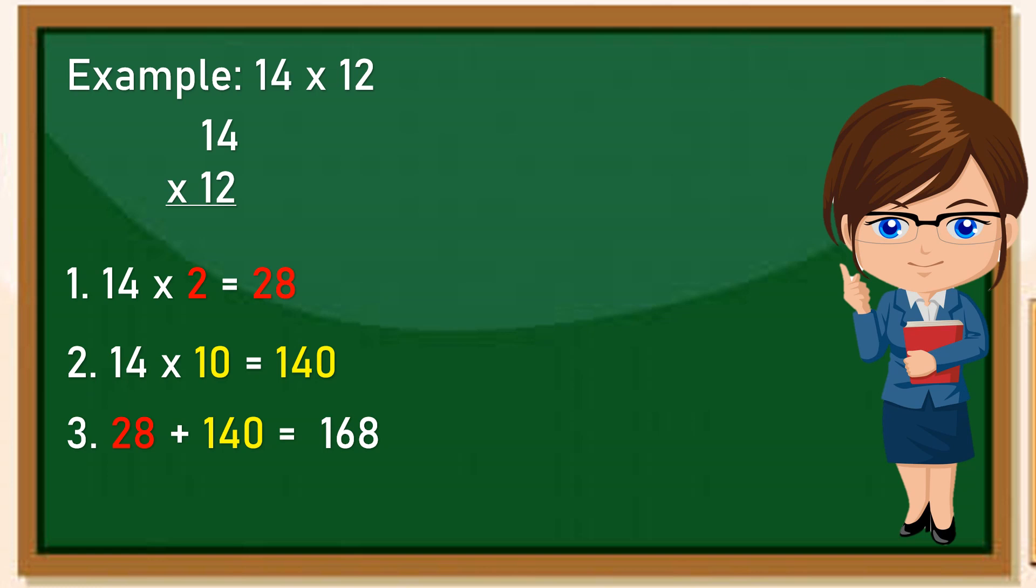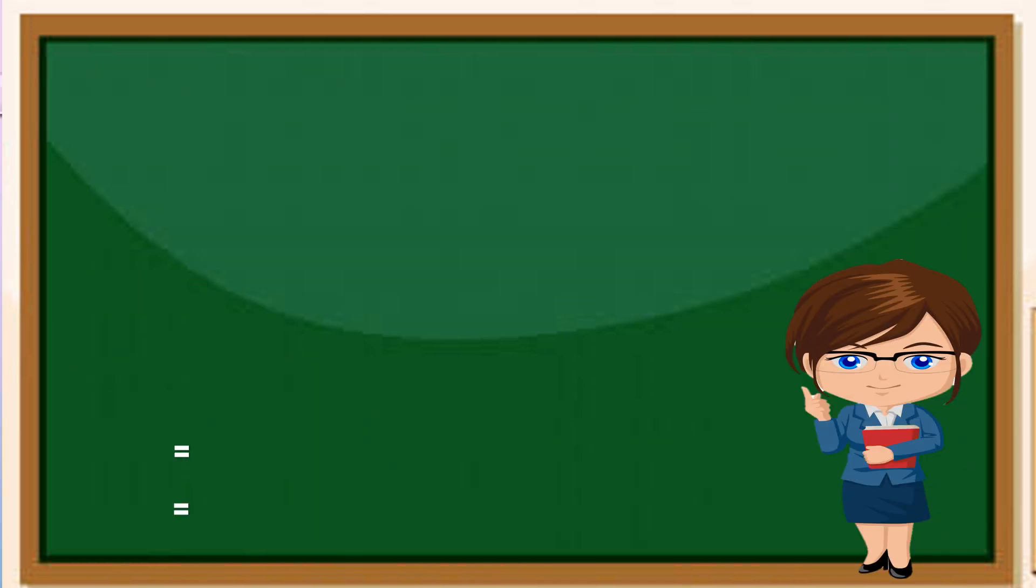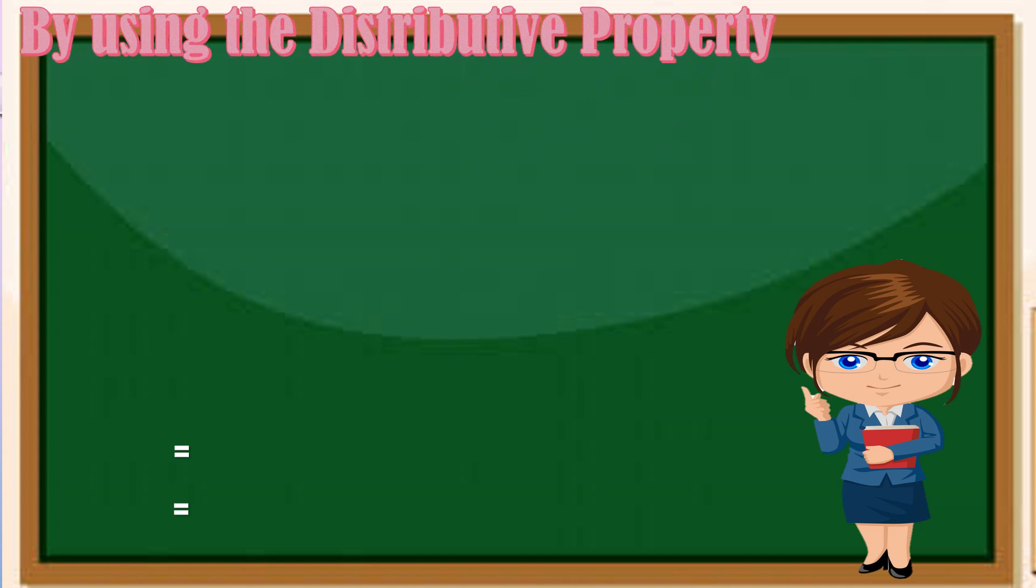Ang sunod natin tatalakayin ay multiplying mentally by using the distributive property. So example: 4 times 17. Paano natin ito isasagawa? Sundin lamang ang steps na ito.